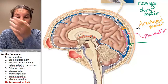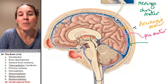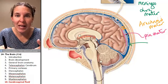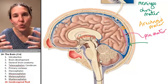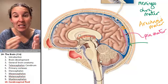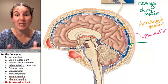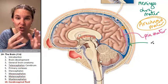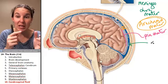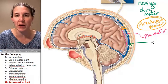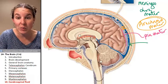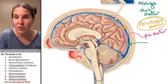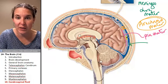Cerebrospinal fluid actually drains into the subarachnoid space — the space between the pia mater and the arachnoid mater. And that's what you're seeing right here. Cerebrospinal fluid is this light blue stuff.